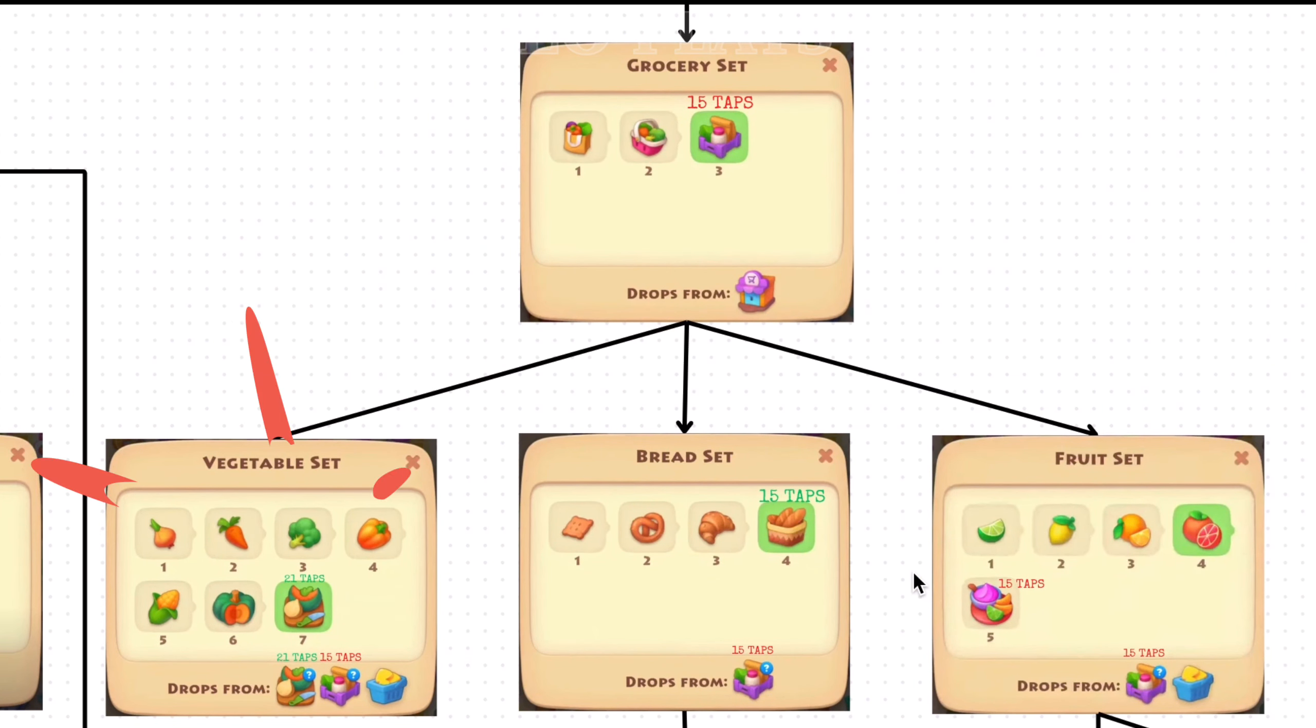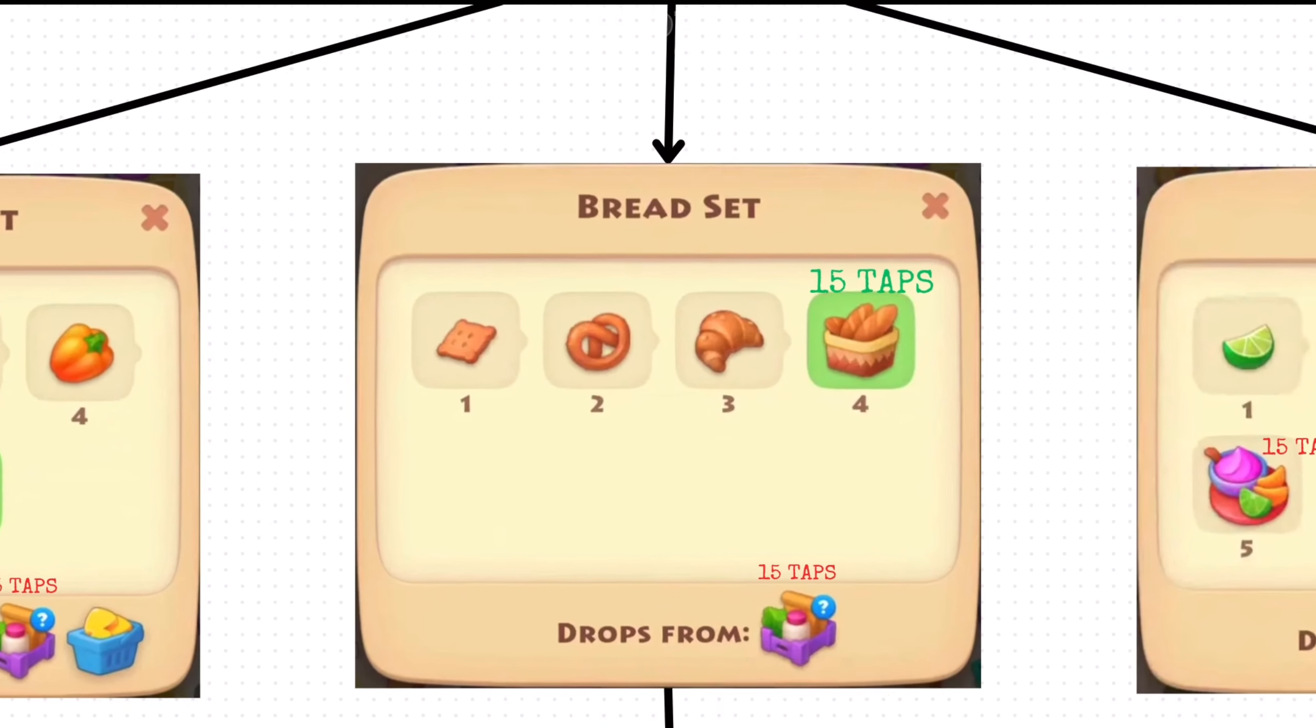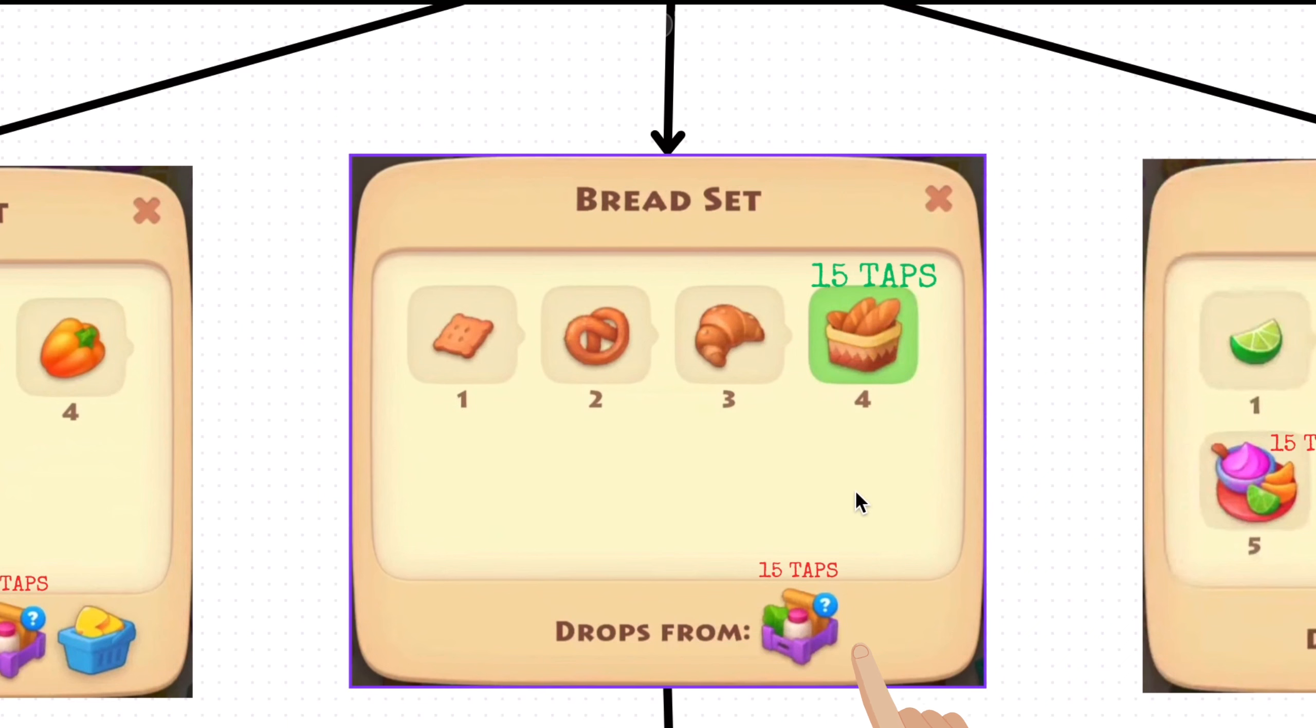Grocery set can make vegetable set, bread set, and fruit set. Note the map shows the number of taps that can be made before an item disappears or reverts to the previous item. For example, if the taps is red, that means the item will disappear after 15 taps. If green, that means after 15 taps the bread basket will revert to a croissant.